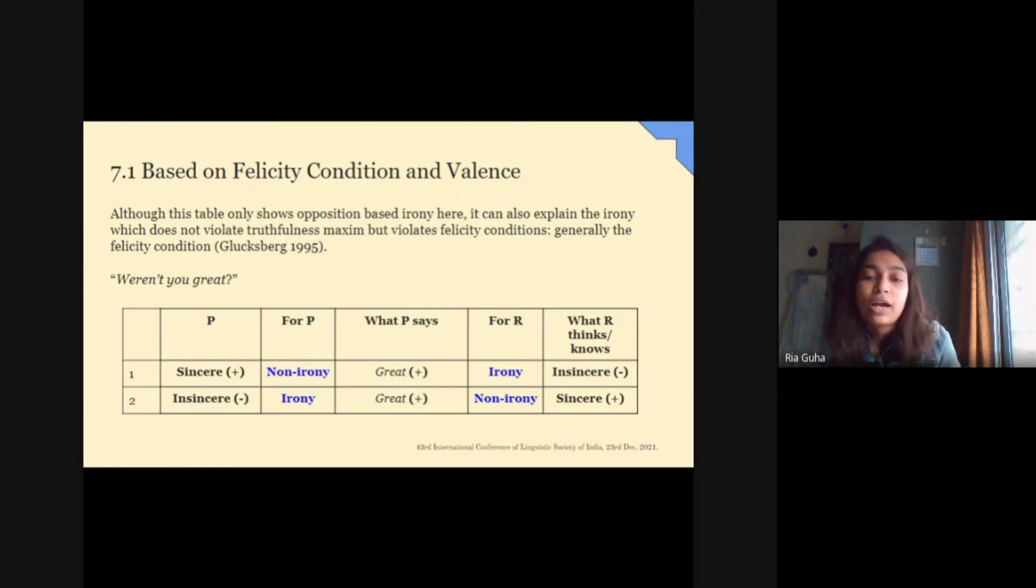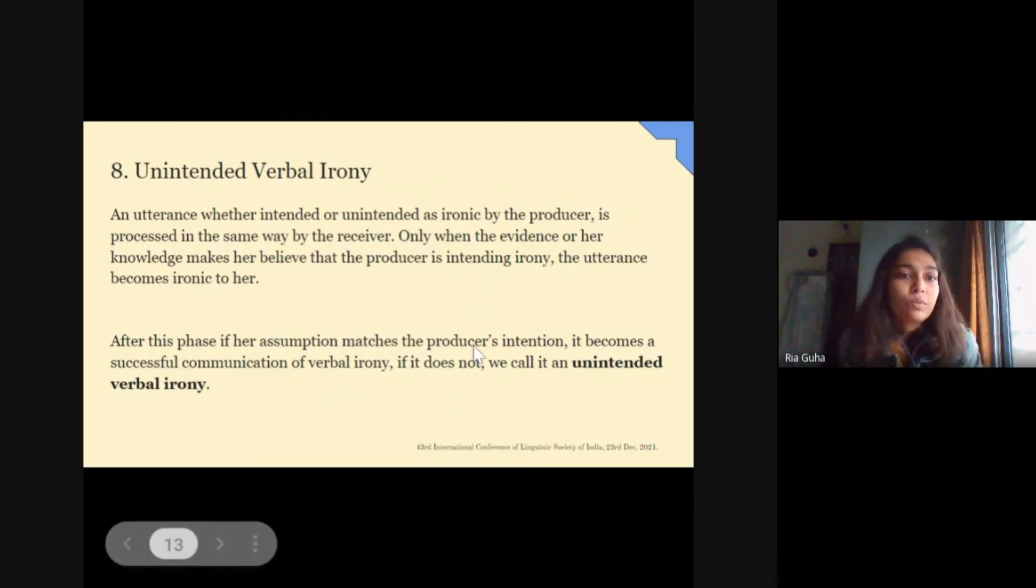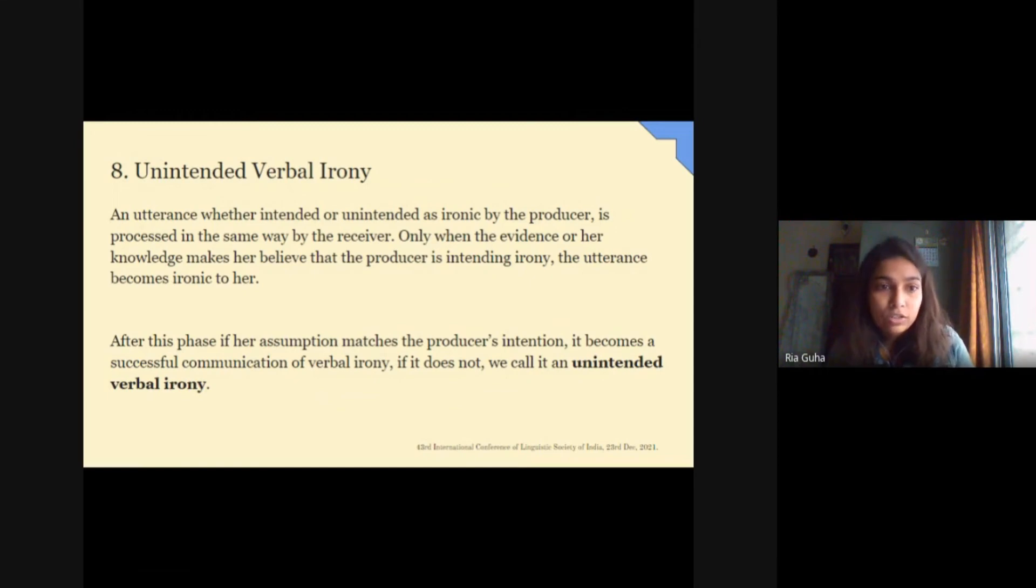While 2 is a misfired verbal irony, 3 is the unintended verbal irony. Now, an utterance whether intended or unintended as ironic by the producer is processed in the same way by the receiver. Only when the evidence or her knowledge makes her believe that the producer is intending irony, the attempt becomes ironic to her. After this case, if her assumption matches the producer's intention, it becomes a successful communication of verbal irony. If it does not, we call it an unintended irony.